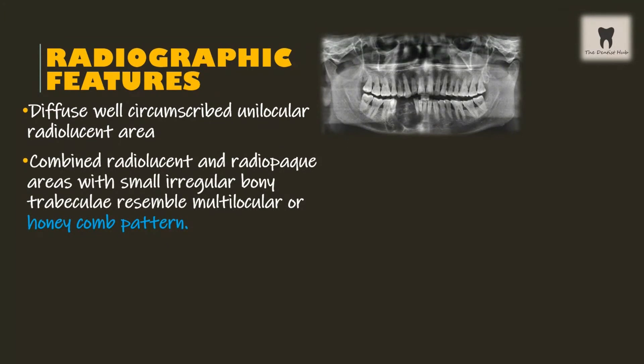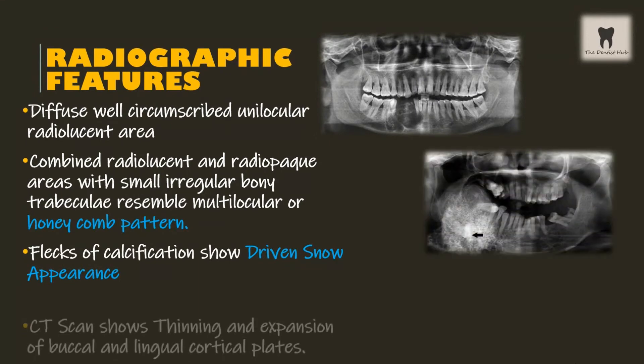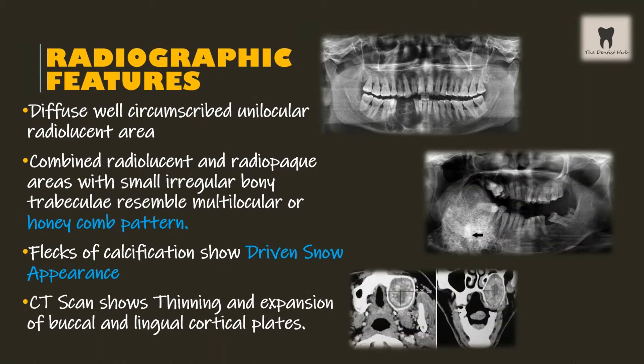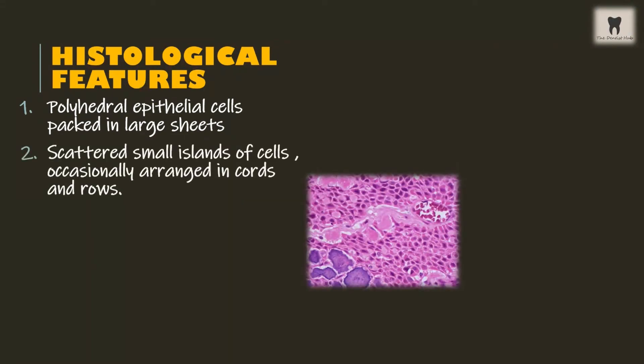In the radiographic picture, there is a diffuse, well-circumscribed unilocular radiolucent area, combined radiolucent and radiopaque areas with small irregular bony trabeculae resembling a multilocular or honeycomb pattern. Flecks of calcification show a driven snow appearance. CT scan shows thinning and expansion of the buccal and lingual cortical plates.